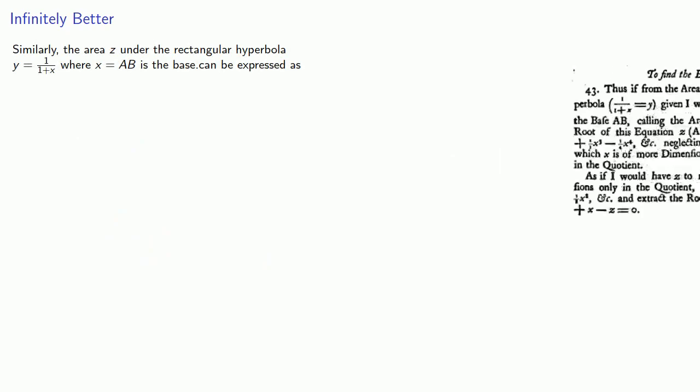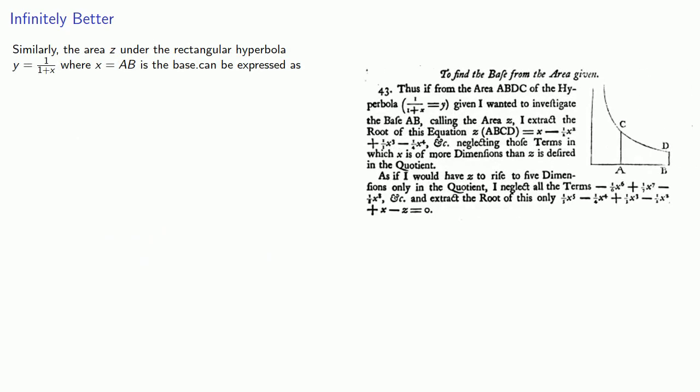And similarly, the area Z under the rectangular hyperbola Y equals one over one plus X, where X equals AB is the base. Newton found that. And again, if we look at this in somewhat modern terms, we see that Z is actually the log of one plus X. So, inverting that X equals E to power Z minus one. And so, a series for X in terms of Z corresponds to a series for E to power Z minus one.